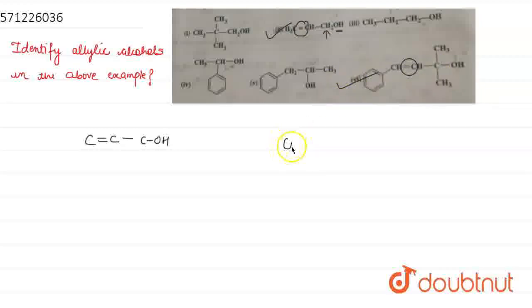So, our option second and sixth will be correct. In the other options, we don't have double bond. That's why we don't have allylic carbon as well. Thank you very much.